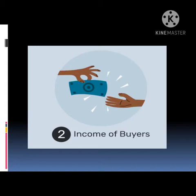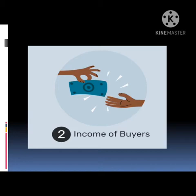The third determinant is prices of related goods or services. When the price of complementary goods or services rises, it raises the cost of using the product you demand, so you will want less. The opposite occurs when the price of a substitute rises — people will want more of the good or service and less of its substitutes.